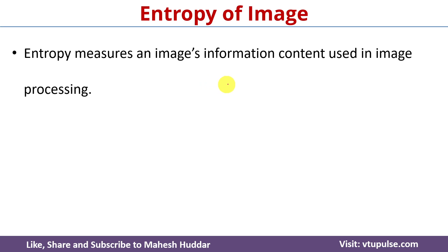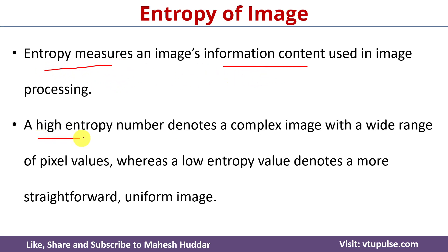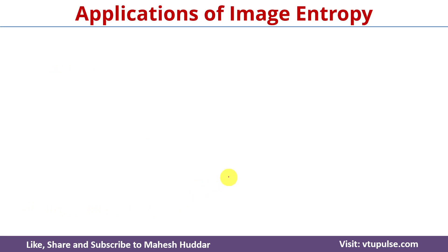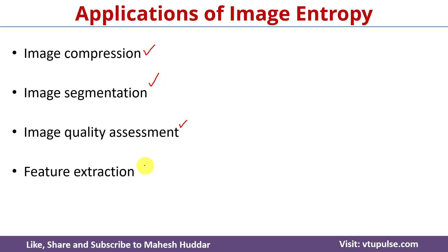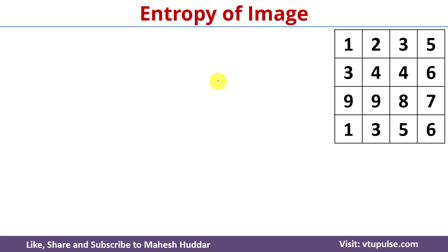The main aim of digital image processing is to get the information content of a given image. Entropy is one measure used to get the information content of a given image. High entropy indicates that the image is complex and has a wide range of pixel values, whereas low entropy indicates the image is straightforward and has a uniform appearance. There are a lot of applications of entropy in image processing: image compression, image segmentation, image quality assessment, and feature extraction.